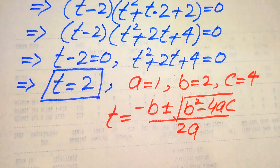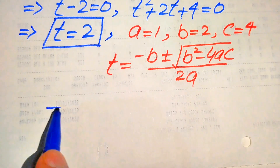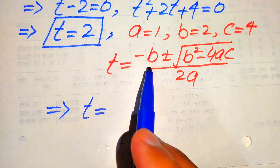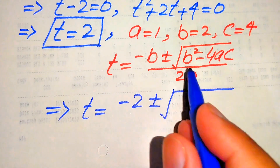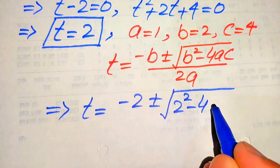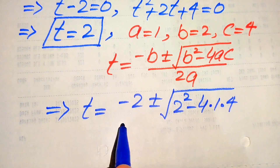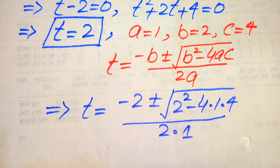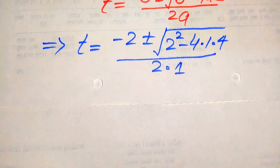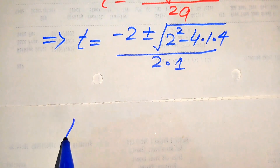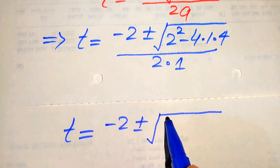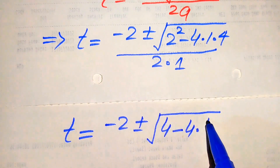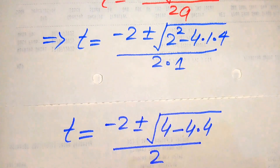We substitute the values of a, b, and c into the formula. After substituting, t equals minus 2 plus or minus square root of (2 squared minus 4 times 1 times 4) divided by 2 times 1. Simplifying further: t equals minus 2 plus or minus square root of (4 minus 16) divided by 2.